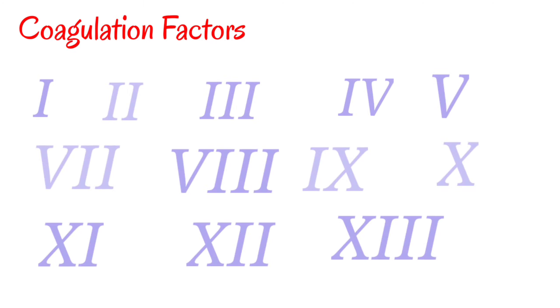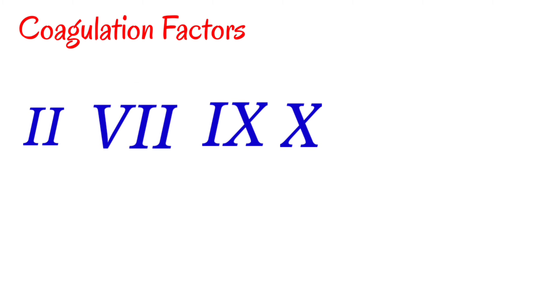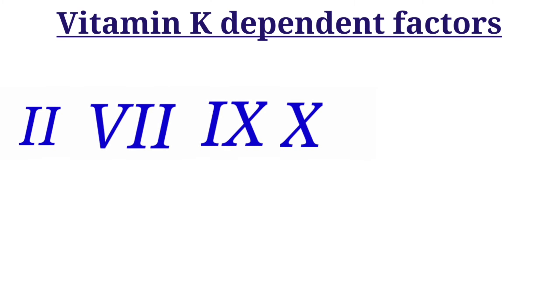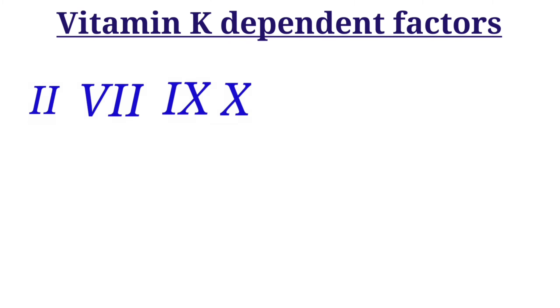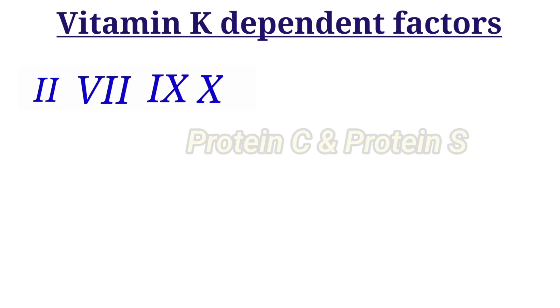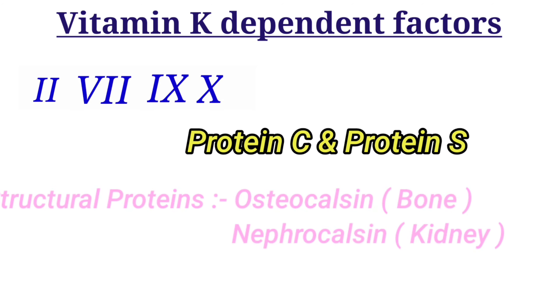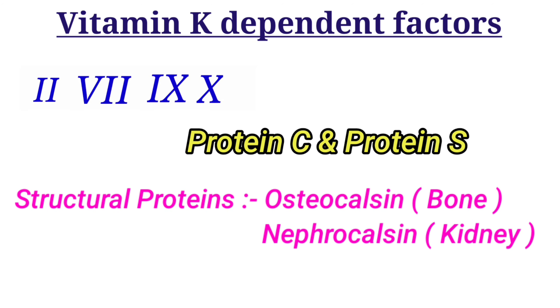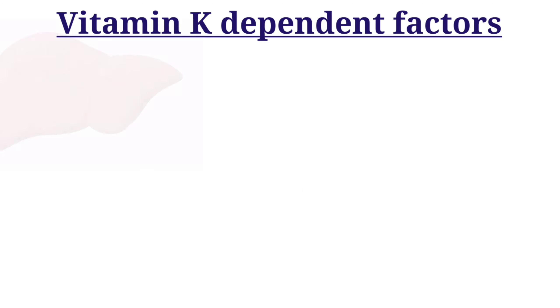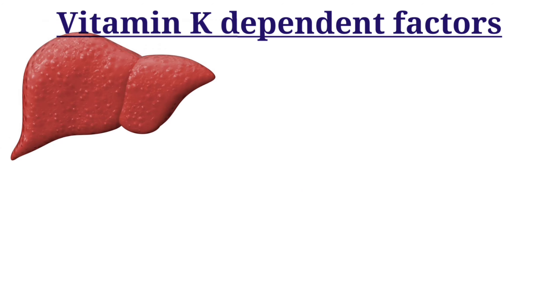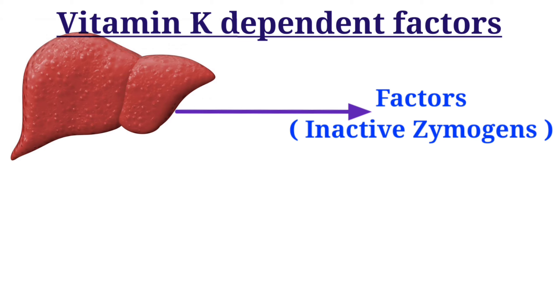We know that there are coagulation factors numbered from 1 to 13. Among them, factors 2, 7, 9, and 10 are vitamin K dependent, along with some other factors — protein C and S, structural proteins, osteocalcin, and matrix Gla protein. These factors are synthesized by the liver as inactive zymogens.